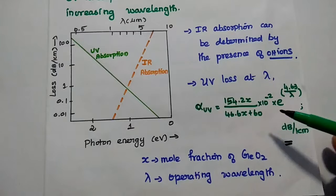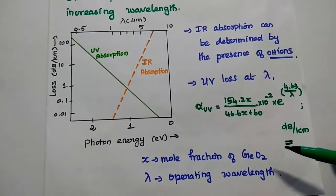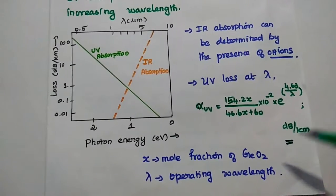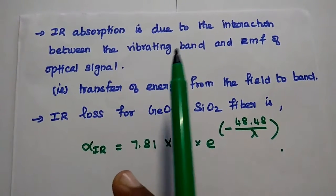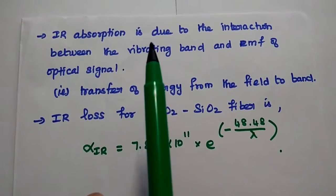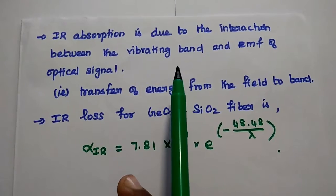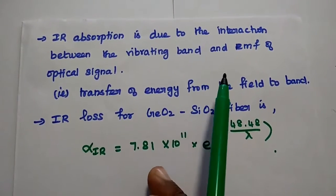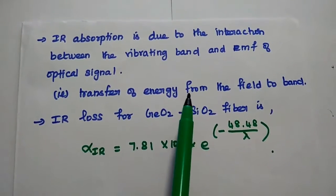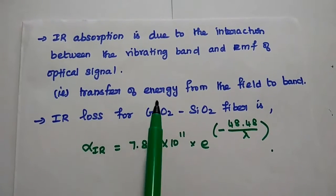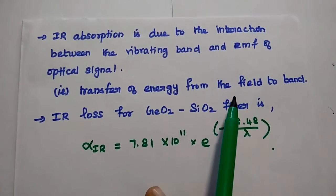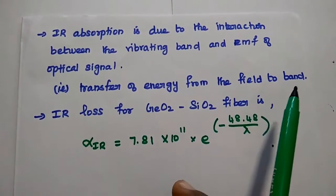X is the mole fraction of germanium oxide and lambda is the operating wavelength. Absorption is caused by the interaction between the vibrating band of infrared frequency range and electromagnetic field of optical signal. That is transfer of energy from the optical field to the IR vibrating band.